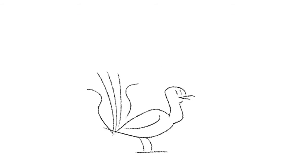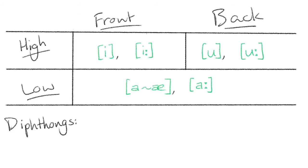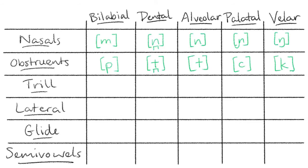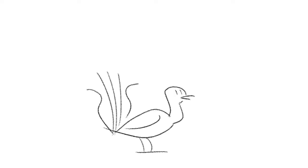Phonetics. Gamilarai has three vowels with short and long forms of each, two phonemic diphthongs AI and UI, five places of articulation each with an obstruent and a nasal consonant, two different rhotic consonants — a glide and a trill — two semi-vowels, and one lateral consonant.